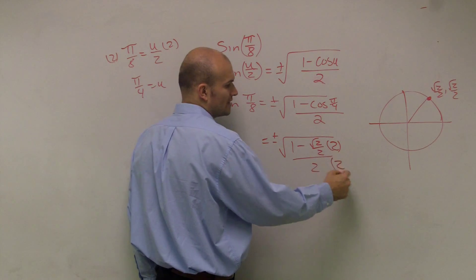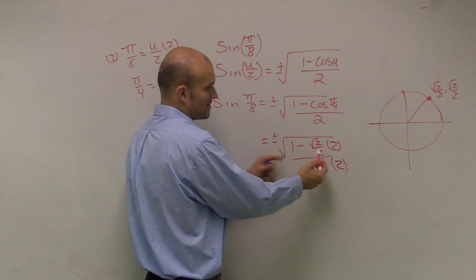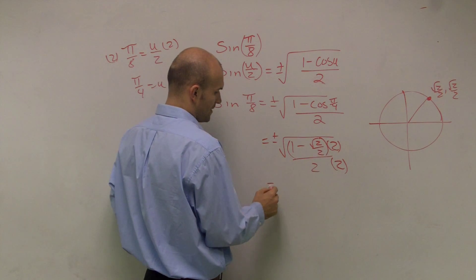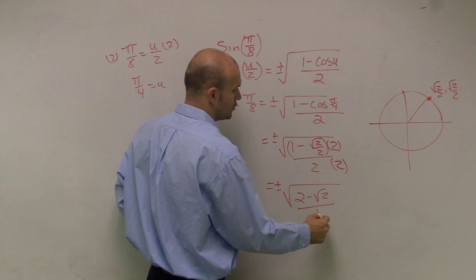But remember, to keep your fraction equivalent, you're going to have to multiply the top and the bottom. And since this is an expression here, I have to make sure I multiply everything times 2. So therefore, what I get is plus or minus radical 2 minus radical 2 all over 4.